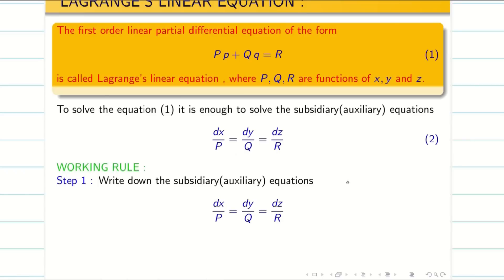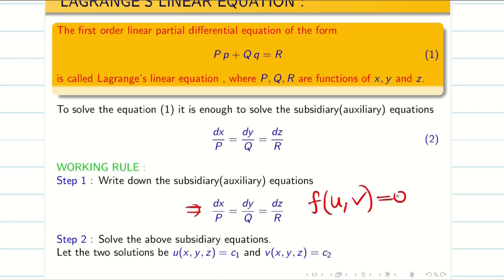From the Lagrangian equation, we have to make the auxiliary equation by finding capital P, Q, and R. The working rule is first write the auxiliary or subsidiary equation. Then solving the subsidiary equation will give us two solutions u and v. The general solution is f(u, v) = 0.